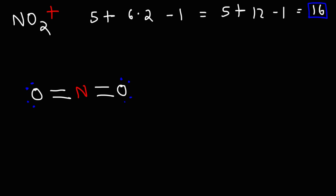So right now we have a total of 16 valence electrons. 2, 4, 6, 8, 10, 12, 14, 16. So this is the Lewis structure of NO2+, the nitronium ion.